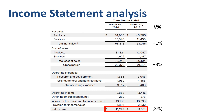Revenue from products, which decreased year over year, has a margin of around 30%. Revenue from services, which increased year over year, has a margin of around 65%. So if the revenue mix improves, gross margin can grow quicker than revenue. Operating expenses — consisting of research and development, and selling, general and administrative expenses — grew by 13% in total, much faster than revenue or gross margin.